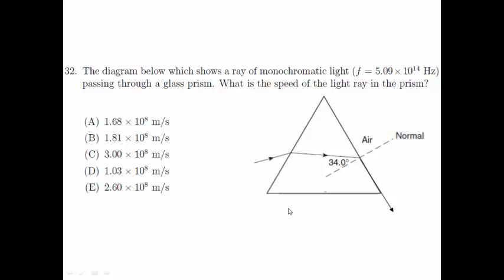Welcome to Singapore Junior Physics Olympiad 2012 General Round Question 32. The diagram below shows a ray of monochromatic light, f equals 5.09 x 10^14 Hz, passing through a glass prism. What is the speed of the light ray in the prism?